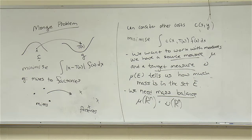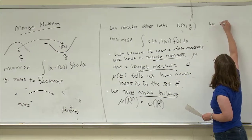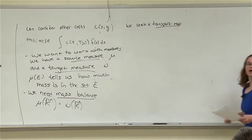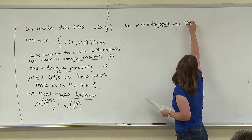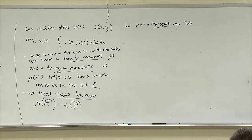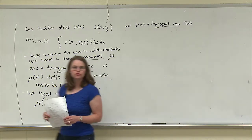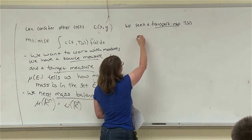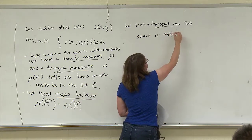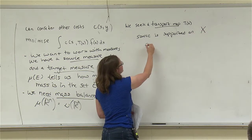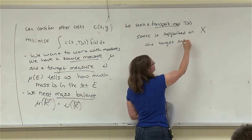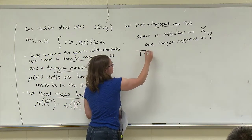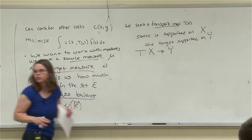We have our measures and now we seek a transport map, which I'll call T(x). This should move mass from the source to the target. So if my source is supported on a set X and my target on a set Y — both subsets of R^n — we're looking at maps from X onto Y.